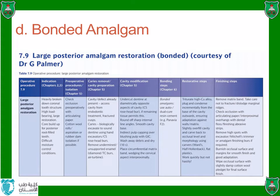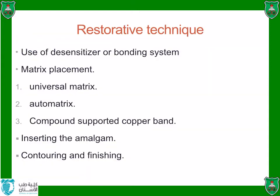After condensing the amalgam, continue normally with burnishing, carving, and correcting contour and occlusion. The only additional step is the bonding. There is limited literature on the advantages of bonded amalgam, and there is no evidence that it provides less microleakage compared to conventional amalgam. It is a new technique that still needs further clinical studies. For the restorative part, use a desensitizer or bonding system — either Gluma or G5 desensitizer as discussed in the lecture on bases and liners.